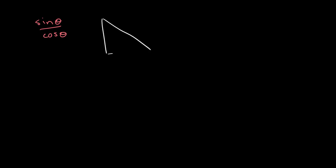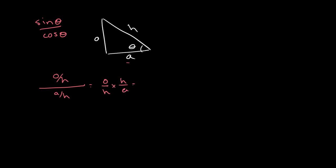To recall what's happening, let's quickly draw our triangle. This is theta, we call this side O or opposite, this side adjacent, and this is the hypotenuse. So what we're taking is essentially O over H, which is sine of theta, divided by cosine of theta which is A over H. This simplifies to O over H times H over A, which gives us a value of O over A. And O over A is equal to tan of theta.